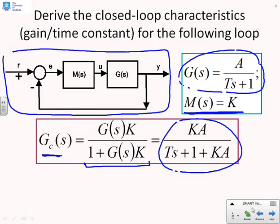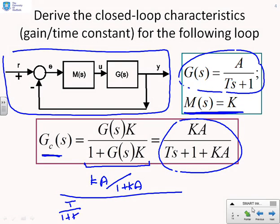If I put this in time constant form, I can rewrite the numerator as KA over 1 plus KA, and rewrite the denominator as T over 1 plus KA into s plus 1. You'll notice I've divided the numerator and denominator by 1 plus KA to put it into a more standard time constant form.